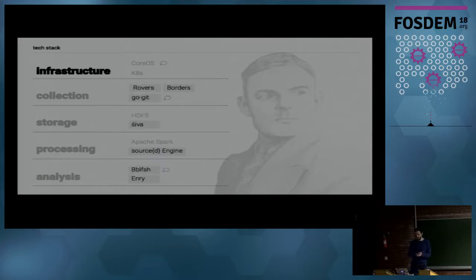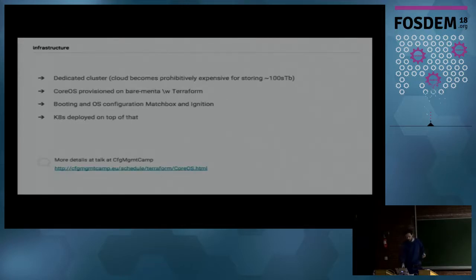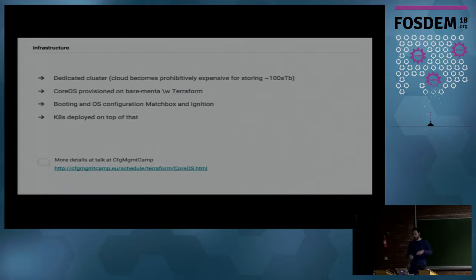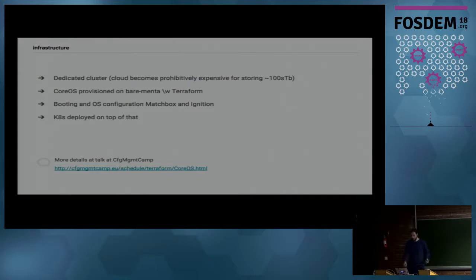Things with gray boxes around them are the things we build at Sourced, and we'll go through the full stack one by one. To run the software you need some hardware. On the infrastructure side, we have a dedicated cluster using what's called immutable infrastructure — machines that are provisioned from boot with CoreOS and eventually become part of a Kubernetes cluster where you can schedule your applications. There will be a detailed talk about the infrastructure part at Configuration Management Camp on Tuesday in Ghent.